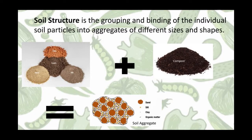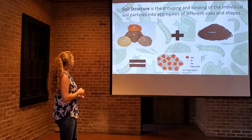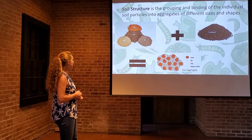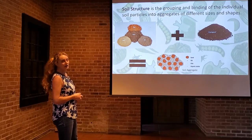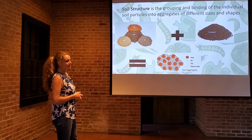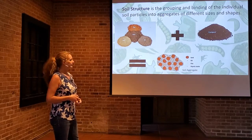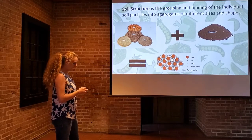Soil structure is defined as the grouping and binding of different soil components into aggregates of different sizes and shapes. So soil, if you'll remember, is composed of clay, loam, sand, and silt. And when you add our compost into that mix, you end up with a soil aggregate. That's what this large particle is.